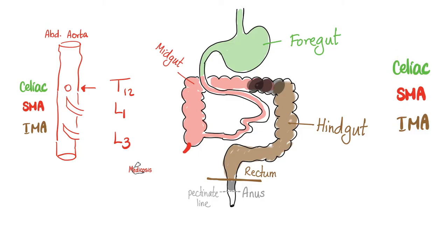As for nerve supply: the midgut is supplied by cranial nerve 10, the vagus nerve, which comes from the brain. The hindgut is supplied by the pelvic nerves, which come from the spinal cord at sacral segments S2, 3, and 4 — all of that is parasympathetic. As for the sympathetic nervous system, the midgut is supplied by the greater splanchnic nerve, and the hindgut by the lesser splanchnic nerve.